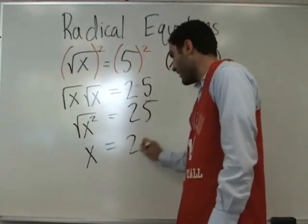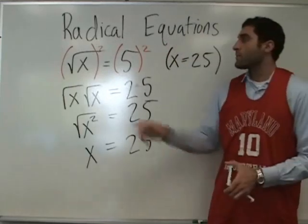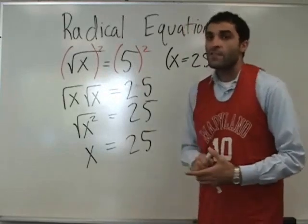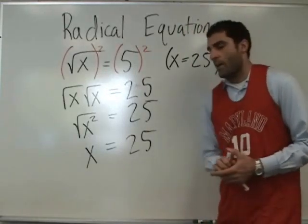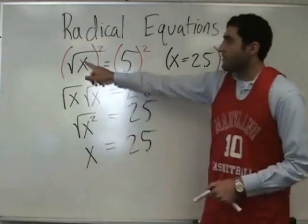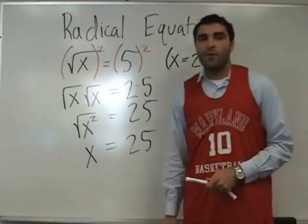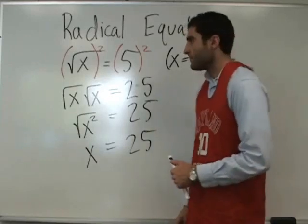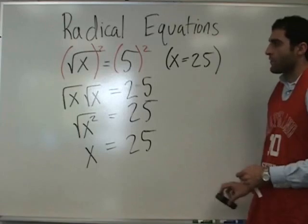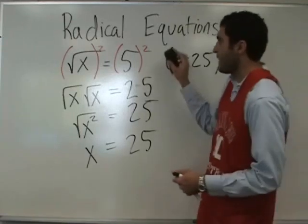That is correct. X equals 25. So to cancel the square root, what do you do to both sides? Square both sides. To cancel square roots from an equation, you square both sides. Good. So that's going to happen for the rest of today. That's the main concept.